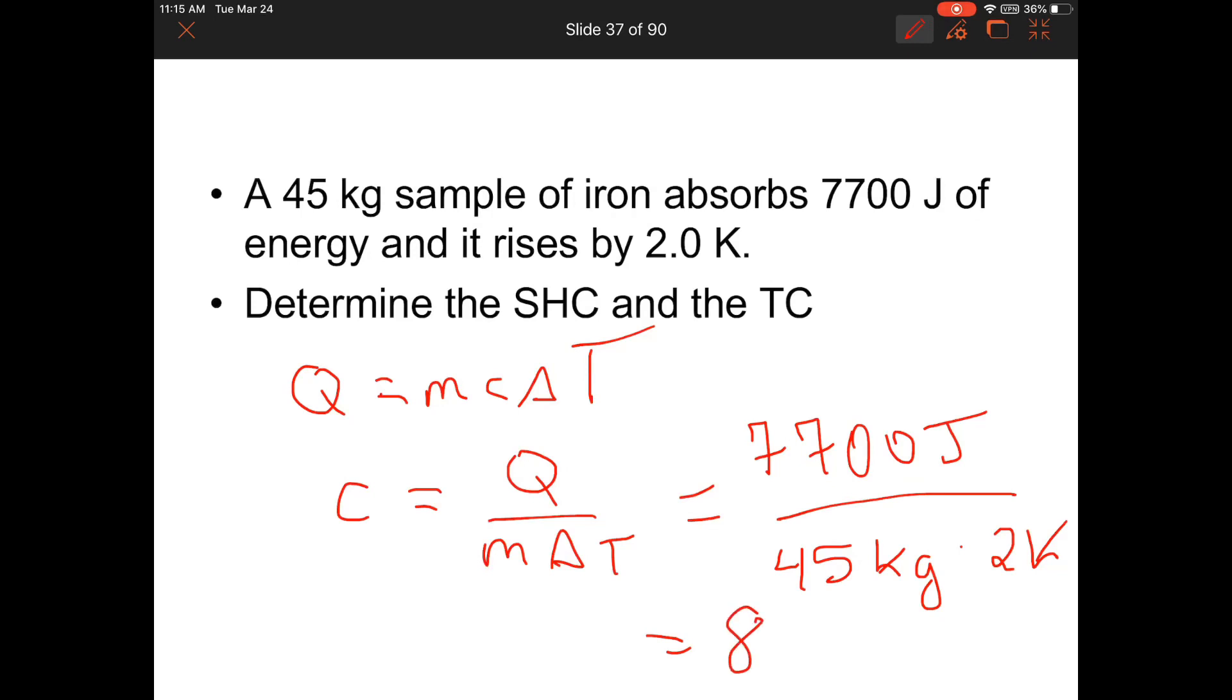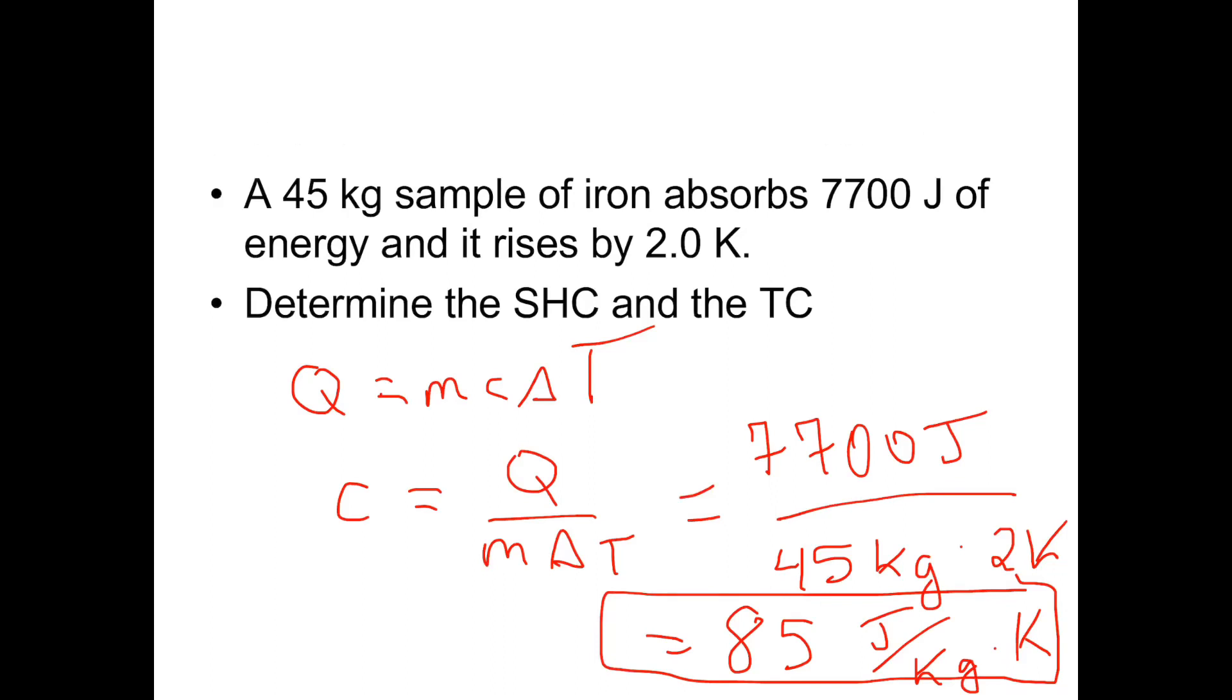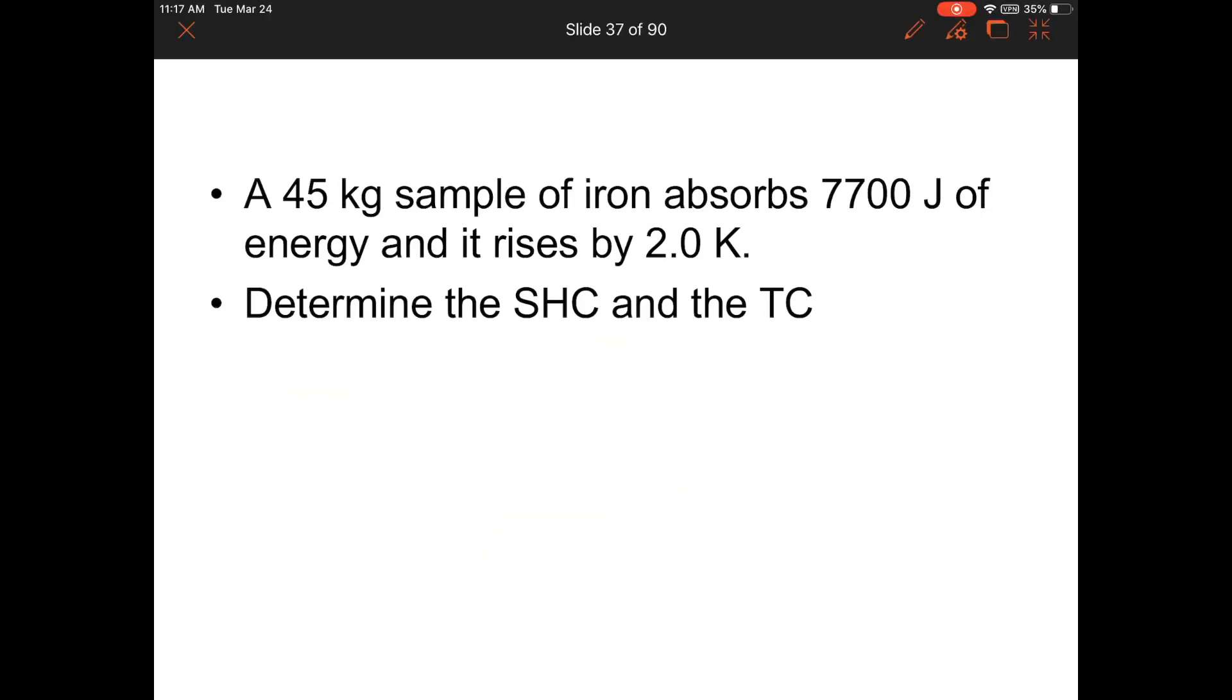7700 divided by, that will be 90 in the denominator. Okay, so I get 85, roughly, that was rounded, joules per kilogram Kelvin. That is my answer for the specific heat capacity. Notice that is a test or a value that is talking about the energy required to raise 1 kilogram 1 Kelvin now. Because I've divided by 45 and I've divided by 2. So now it's per kilogram per Kelvin rather than the amount of energy that was required per 45 kilograms per 2 degrees Kelvin.